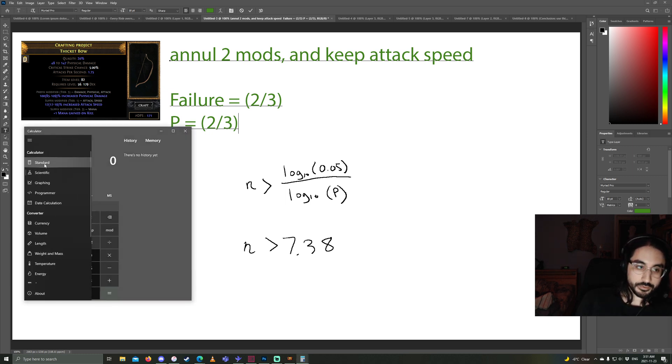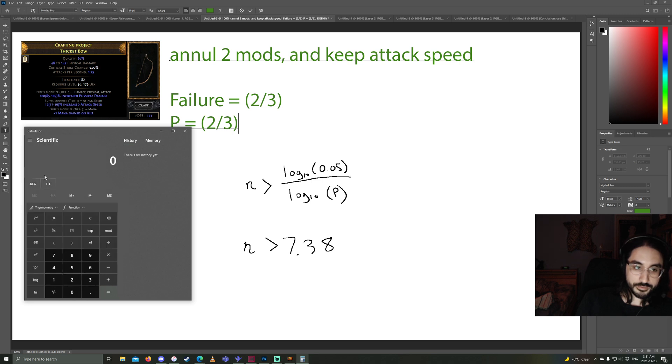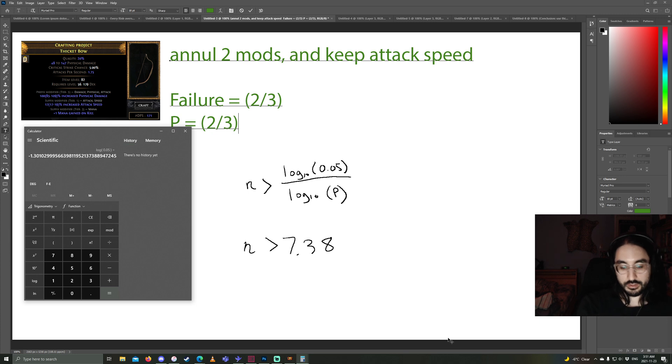So our chances of annulling both and succeeding are one out of three in this scenario. So the failure chance is two out of three. So now let's see how many times we have to repeat this process until we can be very confident that we will hit the desired outcome of isolating the alt-spam mod we want by itself. So let's pull up the Windows calculator. It starts in standard mode, but you need to set it to scientific for this. So the first part, we take the log of 0.05. So to do that, you do 0.05, then you press the log button. And now we want to divide it by the bottom. So we divide it by, now what is P? Bracket, 2 thirds. Close the bracket. Log. So that's our equation. The way we type that, that's how you get log of 0.05 divided by log of 2 thirds. Now what does this give us? 7.38.